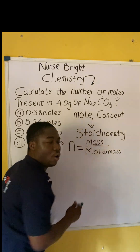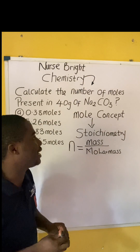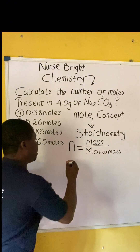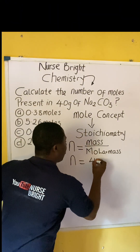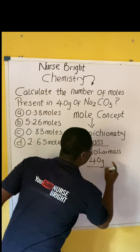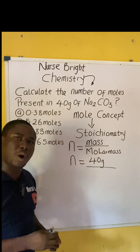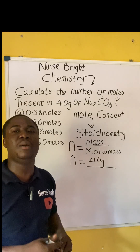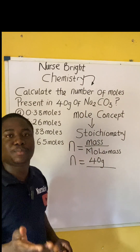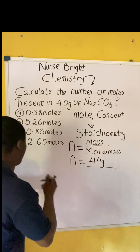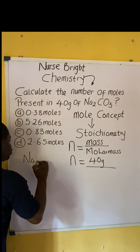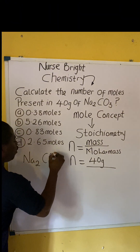We were given mass already. The mass in the question is 40 grams. So number of moles will now be 40 grams divided by molar mass. How do we calculate the molar mass of a compound? Very easy. Let's bring down the compound.